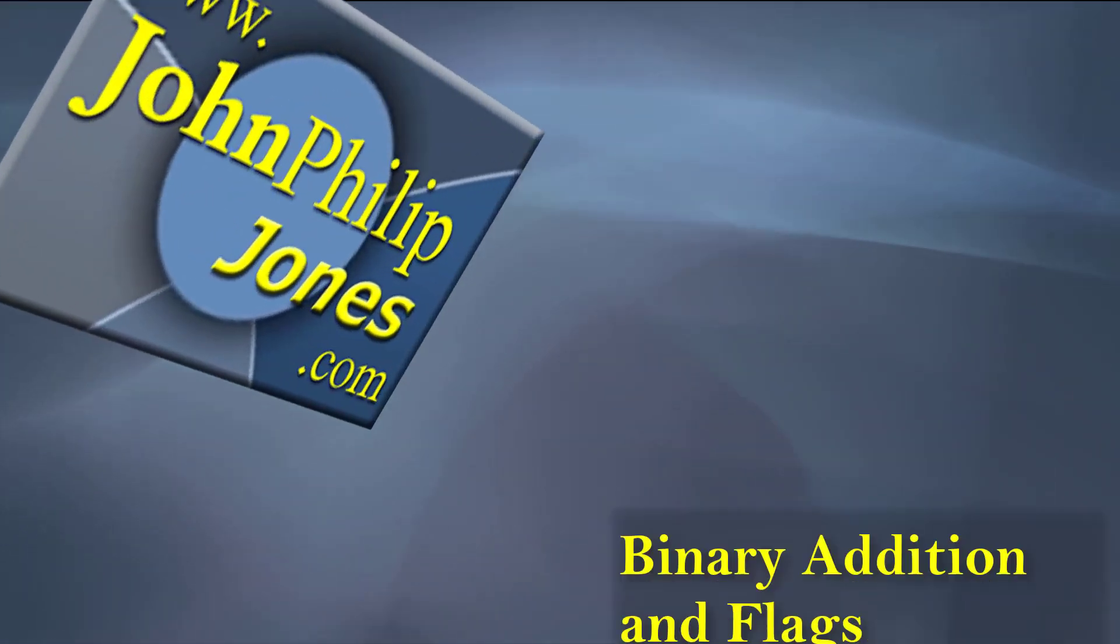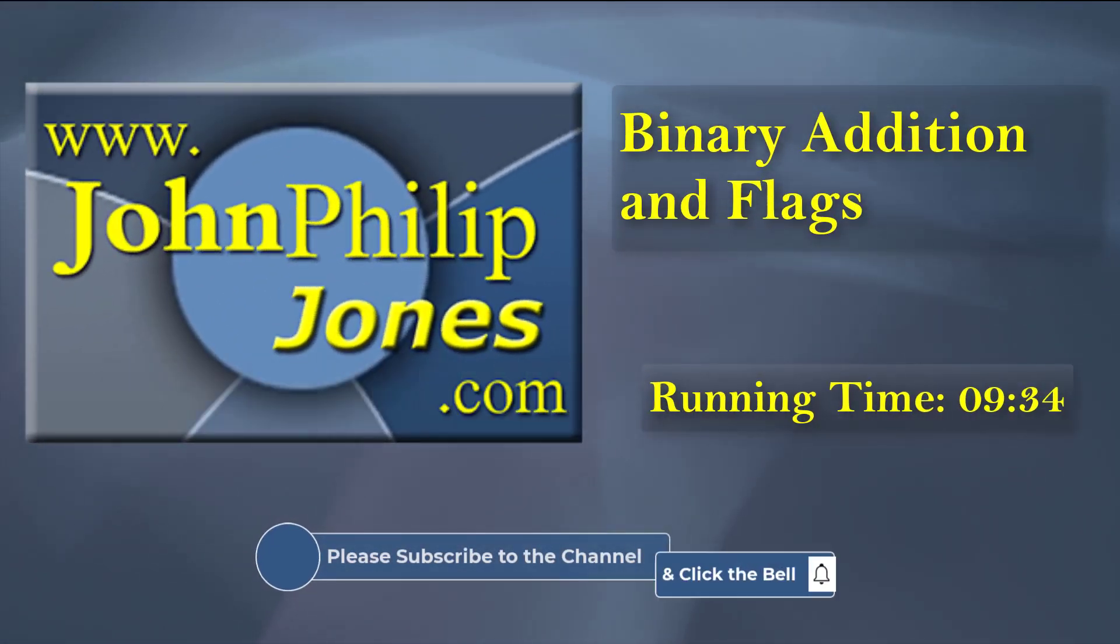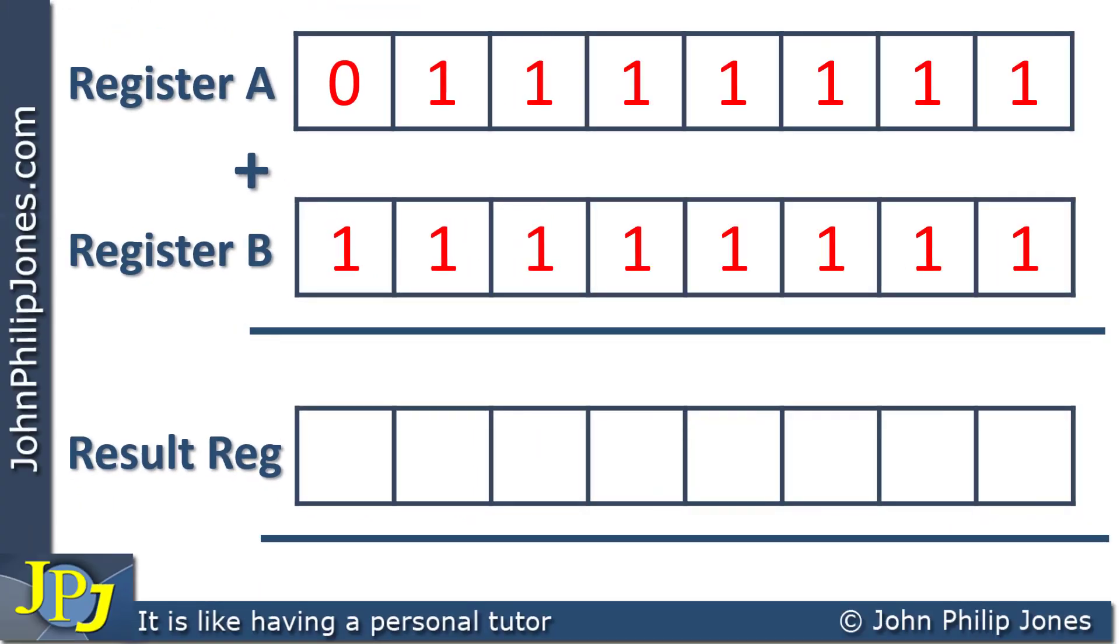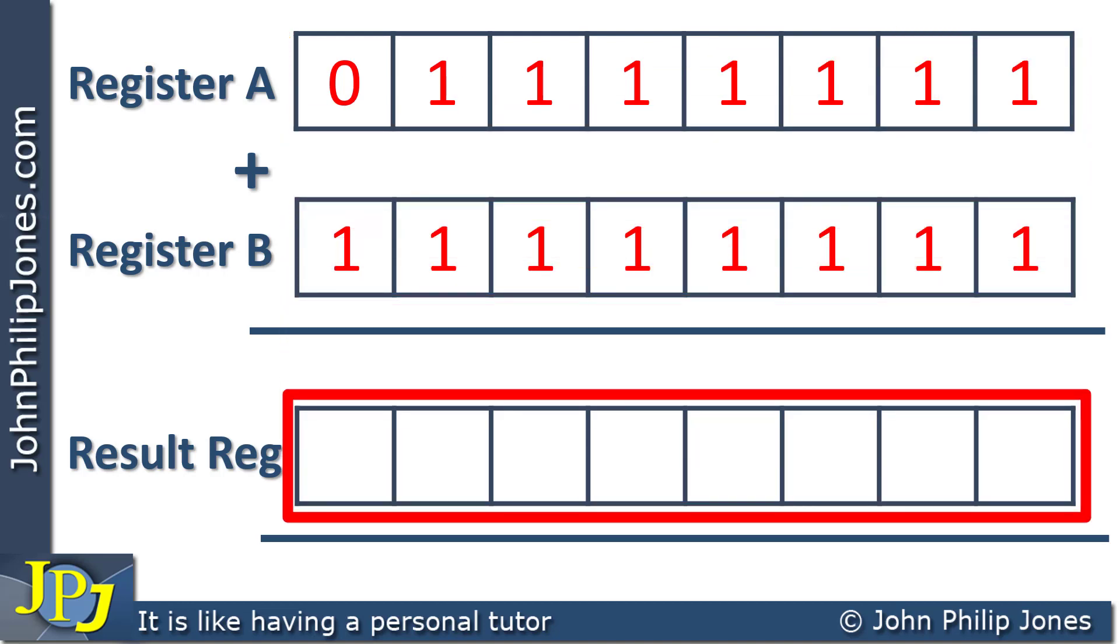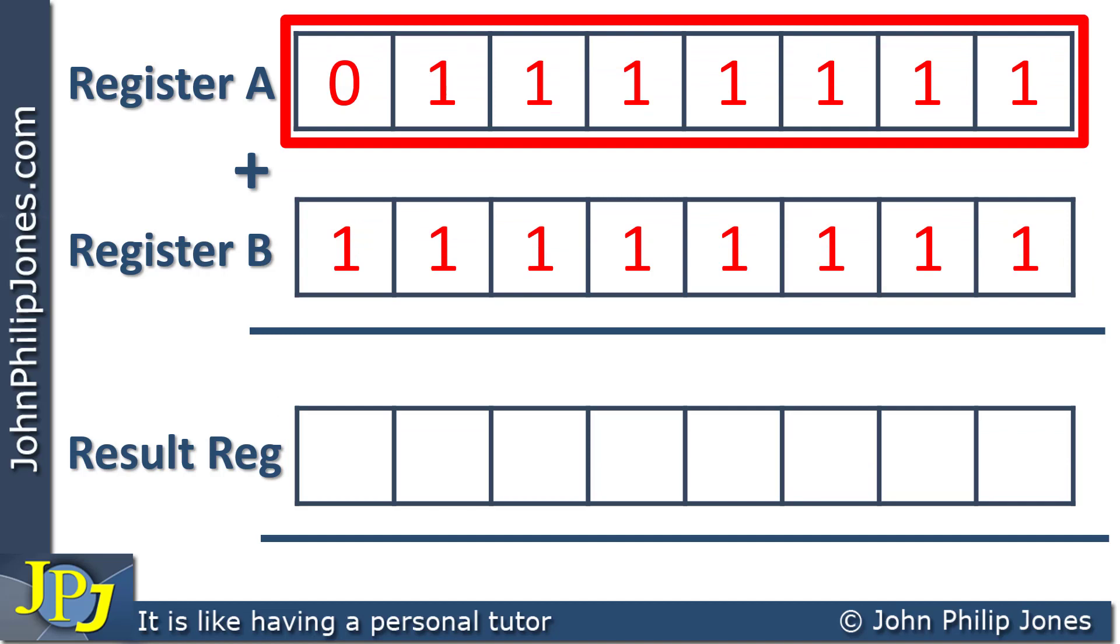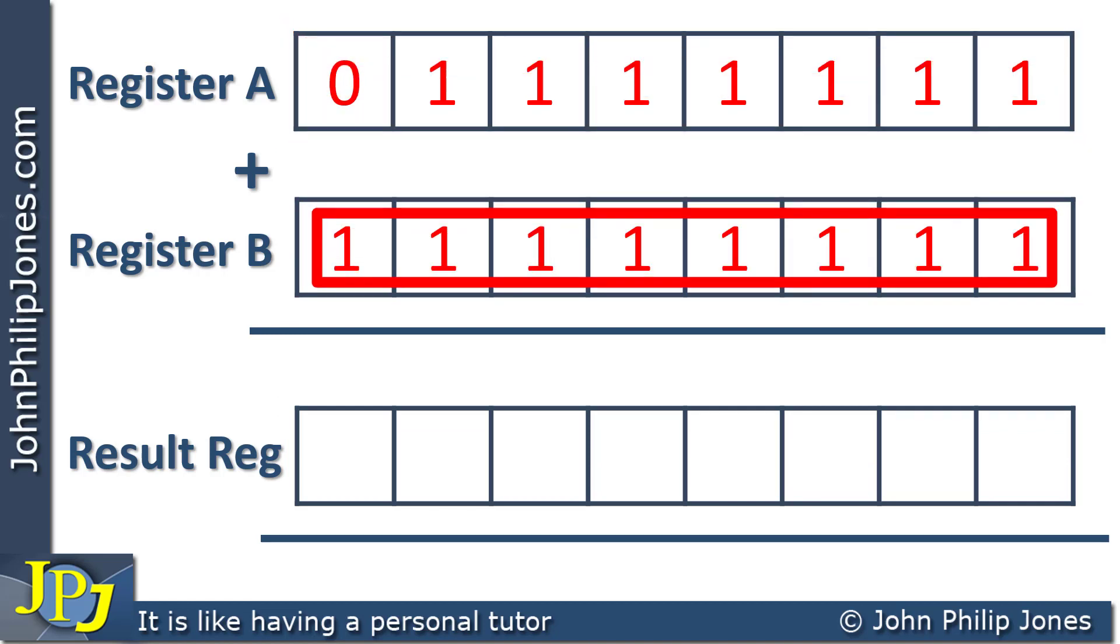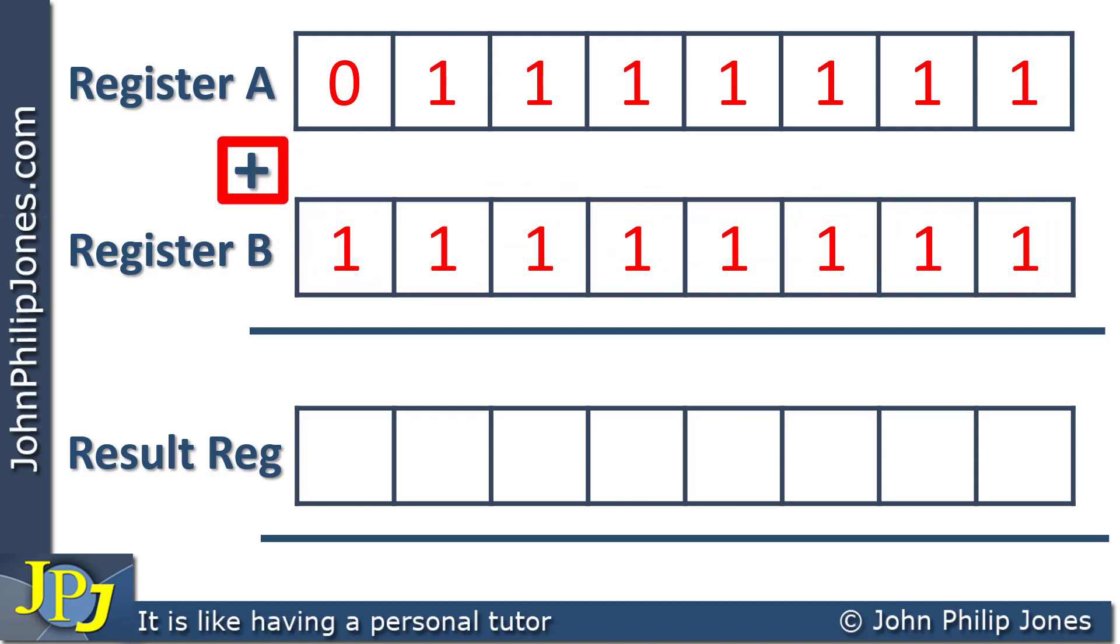This video will show how we deal with the carry that results from the addition of binary numbers. We can see we have three registers: register A, register B, and the result register. Within register A, you can see we have this byte. Within register B, we have this byte. And we're going to add them up and store the result in this register.